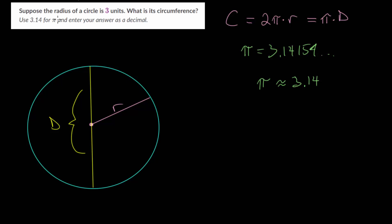Looking at this example problem: suppose the radius of a circle is three units, what is its circumference? We're told the radius value, that R is three units.